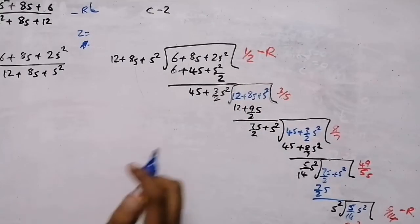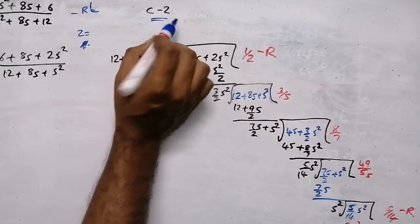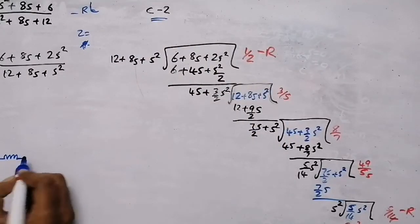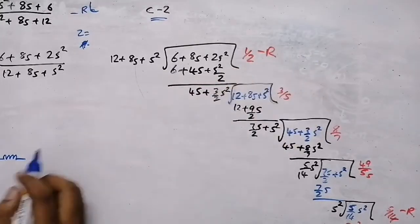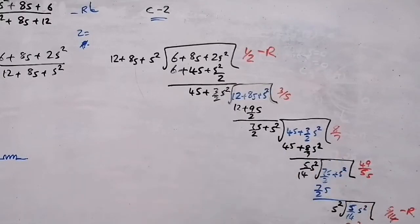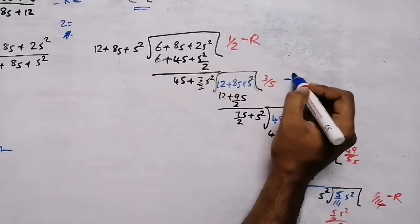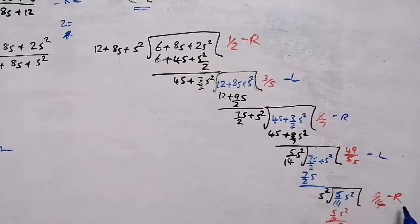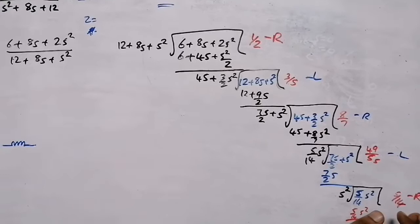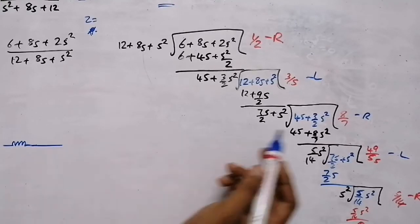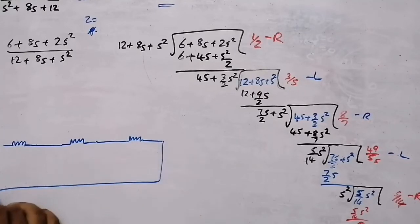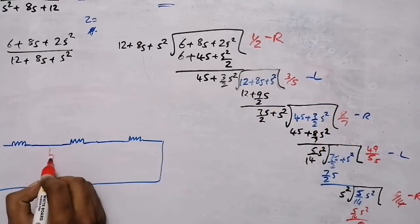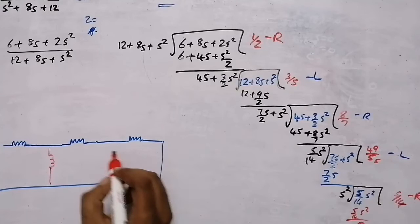In Cauer 2, the elements alternate: resistor, inductor, resistor, inductor, resistor. There are three resistors in series and two inductors as shunt elements. The resistors are series elements and the inductors are shunt (parallel) elements to ground.